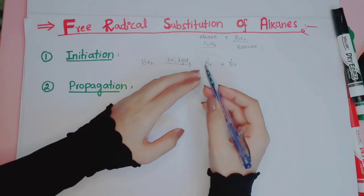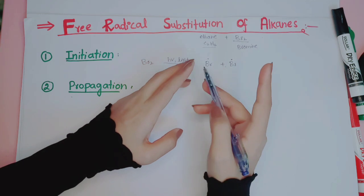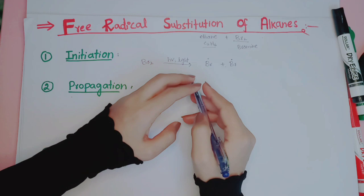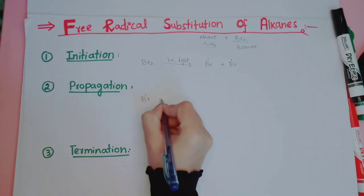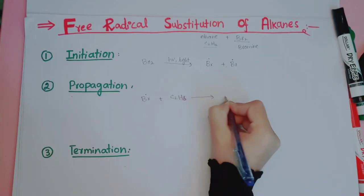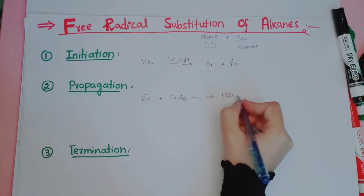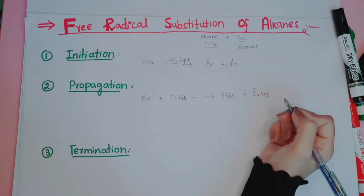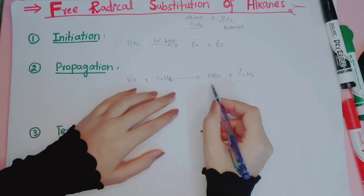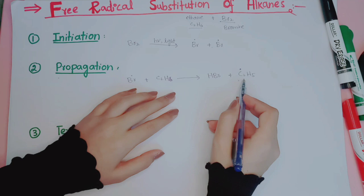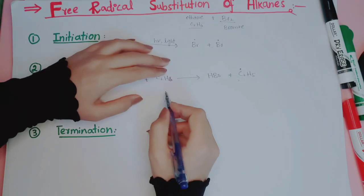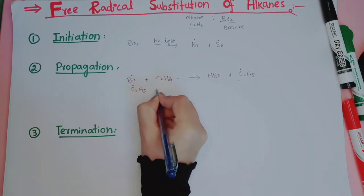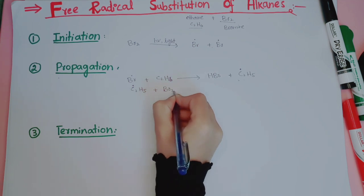In the propagation step, the bromine radicals react with the alkane. The bromine radical takes away one hydrogen atom from the alkane, giving us HBr (hydrogen bromide). Additionally, we get the alkane with a reduced number of hydrogen atoms. One HBr is formed and an ethyl radical (C₂H₅•) is also formed. One hydrogen atom is gone and the carbon is left with one unpaired electron, making it very unstable.